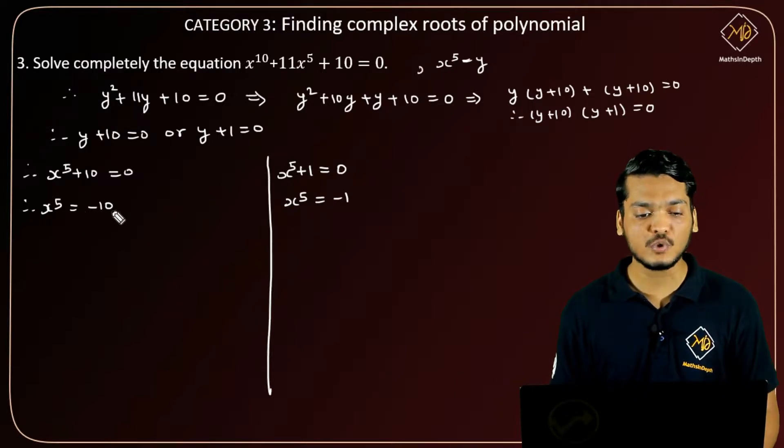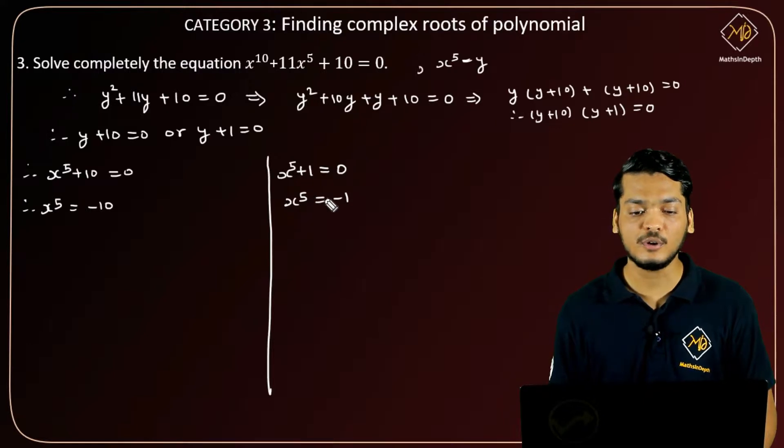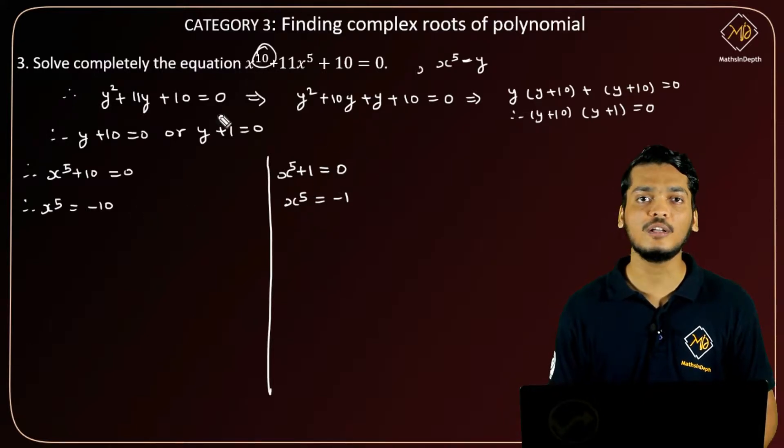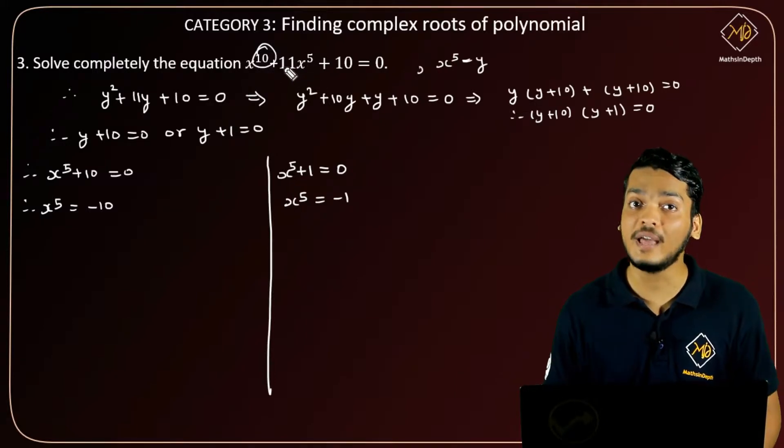So basically here we solve this problem. We have 5 roots from this equation and 5 roots from the other, giving 10 roots total. This is the logic: if we have a polynomial of degree n, then we will have a total of n roots.